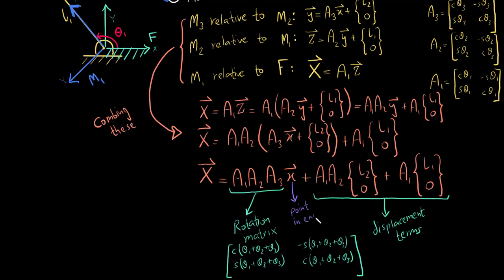The small x is the point which is expressed in the end effector frame and the big X is the same point which is expressed in the fixed frame, the frame which is fixed at the base of the robot.